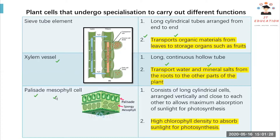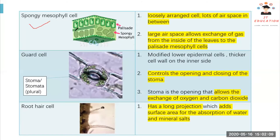The palisade mesophyll cell — the name might be a bit strange, but it contains a lot of density to absorb sunlight for photosynthesis. The spongy mesophyll cell has a lot of space between the cells — loosely arranged — to allow gas exchange from inside the leaves.